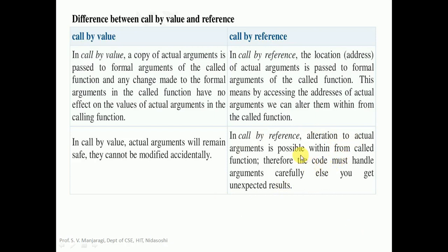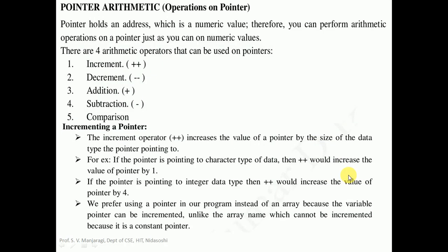That is why you have to be careful in case of call by reference - whenever required then only we need to alter the formal arguments. Now let us move on to the next topic that is pointer arithmetic. We can perform certain operations on the pointer, but not all operations - only a few arithmetic operations. Now we know that a pointer stores an address which is a numeric value, so we can perform arithmetic operations on the pointer as we do with numerical values. There are five arithmetic operations we can use on the pointers: first, increment operator (plus plus); second, decrement operator (minus minus); third, addition (plus); fourth, subtraction (minus); fifth, comparison.